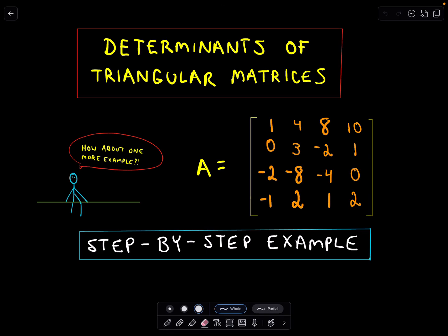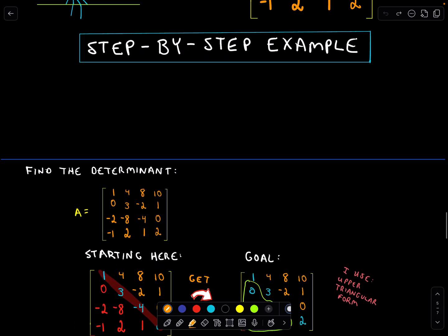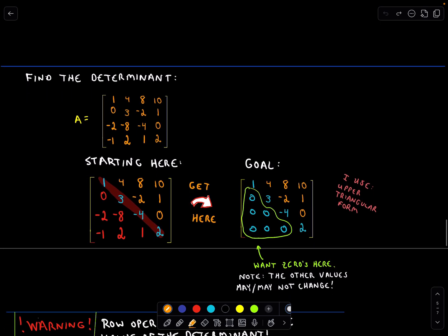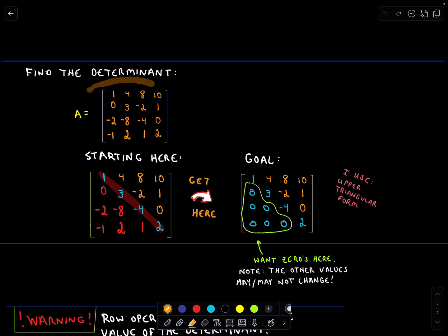Here we're going to look at another example of finding the determinant of a matrix, and we're going to put that matrix into triangular form. In particular, I'm going to put mine into upper triangular form. Just to recall where we're going: I'm starting with some matrix, my goal is to ultimately put it in upper triangular or lower triangular form.